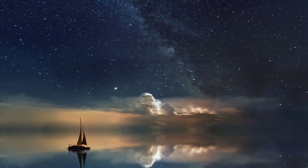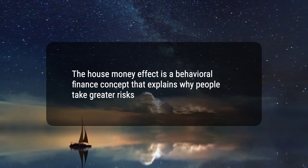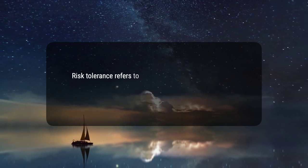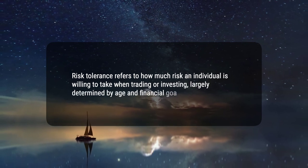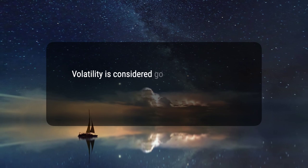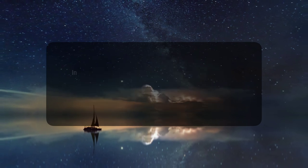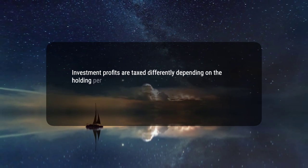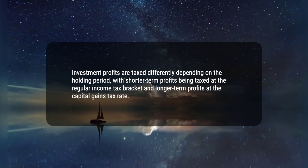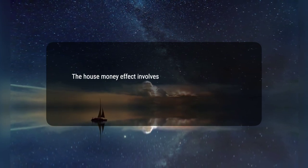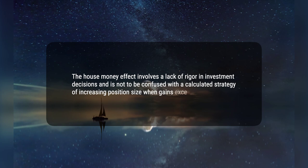Here are five key takeaways. One, the house money effect is a behavioral finance concept that explains why people take greater risks with investment profits. Two, risk tolerance refers to how much risk an individual is willing to take when trading or investing, largely determined by age and financial goals. Three, volatility is considered good for trading as it presents opportunities for higher profits, but also increases the chances of losses. Four, investment profits are taxed differently depending on the holding period, with shorter-term profits taxed at the regular income tax bracket and longer-term profits at the capital gains tax rate. Five, the house money effect involves a lack of rigor in investment decisions and is not to be confused with a calculated strategy of increasing position size when gains exceed expectations.